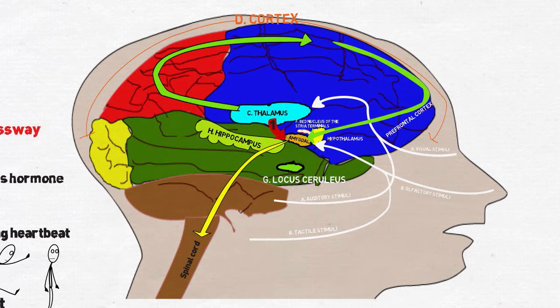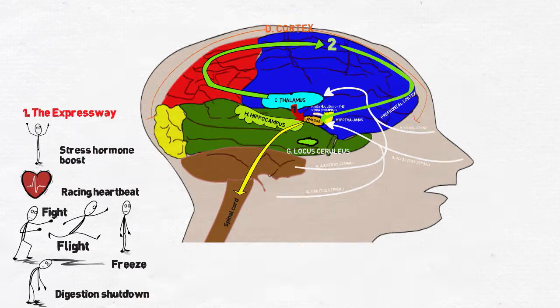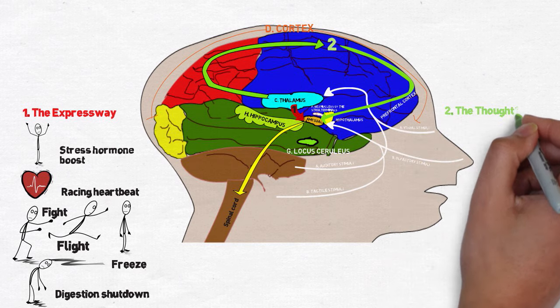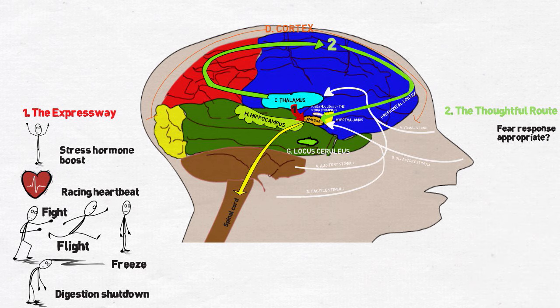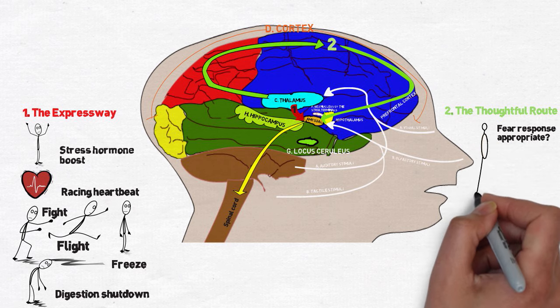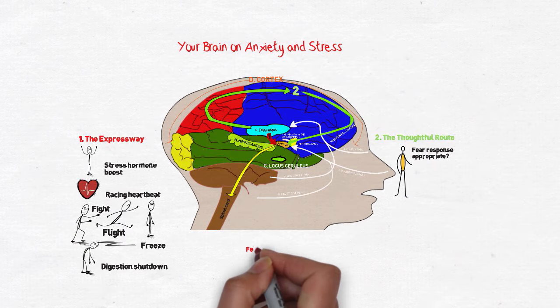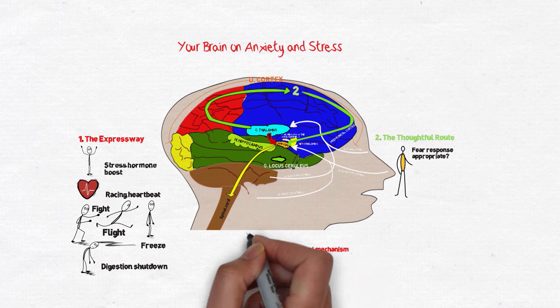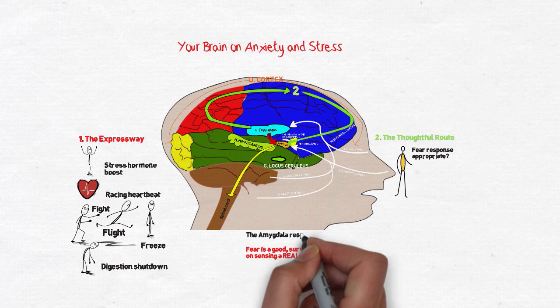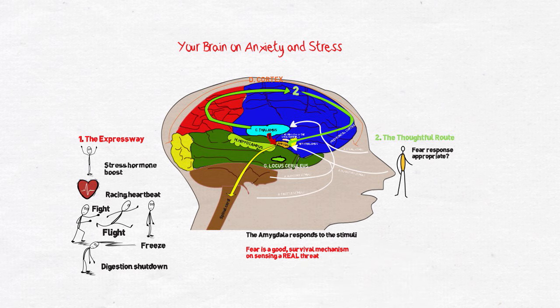Only after the fear response has been activated does the conscious mind kick in. Some sensory information takes a more thoughtful route, from the thalamus to the cortex. The cortex decides whether the sensory information warrants a fear response. If the fear is a genuine threat in space and time, the cortex signals the amygdala to continue being on alert. Fear is a good, useful response essential to survival.